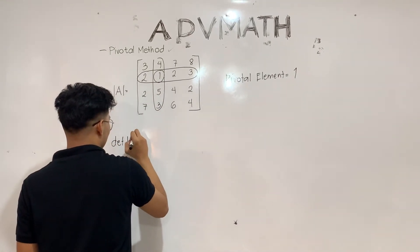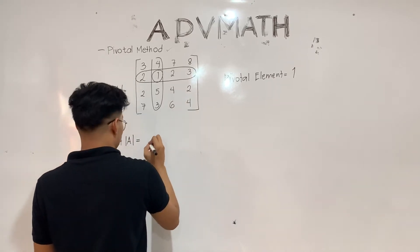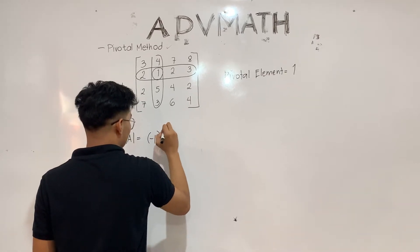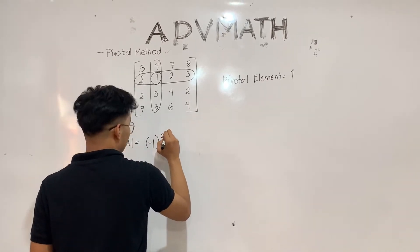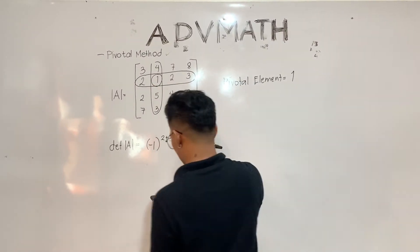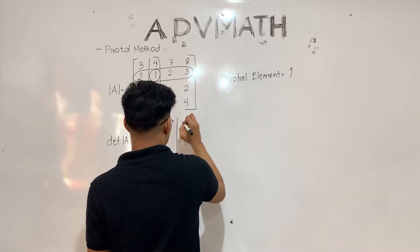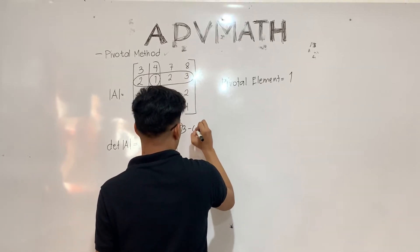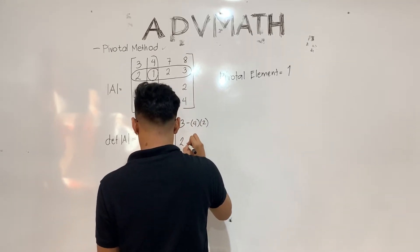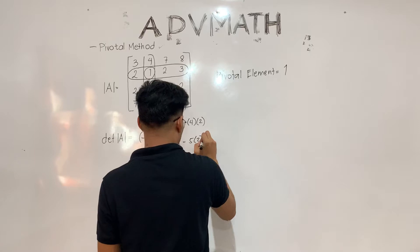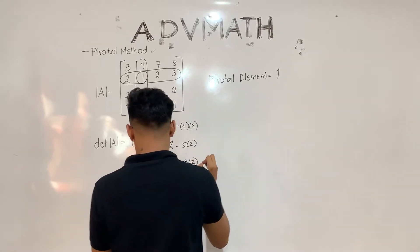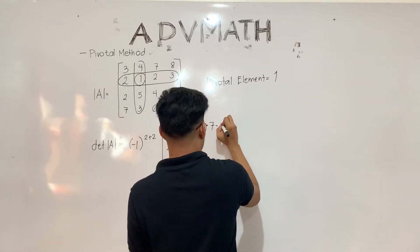The solution for the pivotal element method is: determinant A equals negative 1 raised to the sum of the position of the pivotal element, which is 2 plus 2, multiplied by the n minus 1 determinant. We are going to subtract the remaining numbers from the product of the elements in the pivotal rows and columns that intersect those numbers.